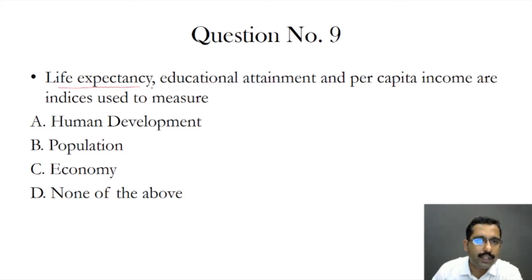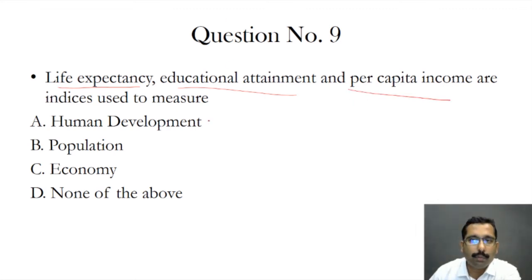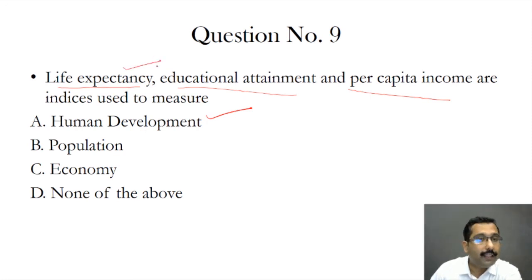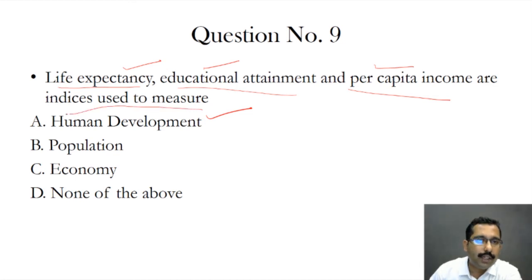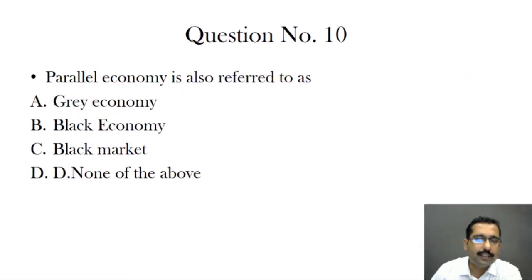Question nine: life expectancy (how many years a person lives on average), educational attainment (to what extent someone can get qualified), and per capita income (national income divided by total population) are the indices used to measure what? They are used to measure human development. For human development to occur, people must live a healthy life, have educational facilities, and have income. When all three come together, human development takes place. The answer is option A.